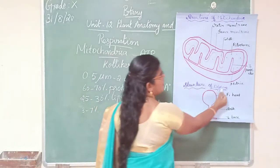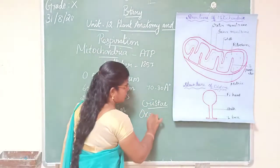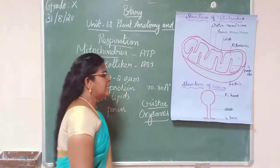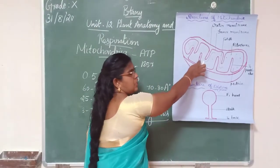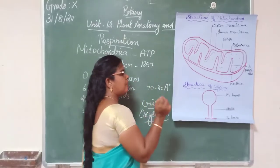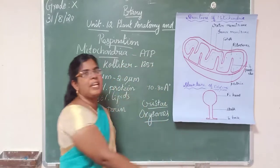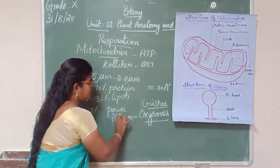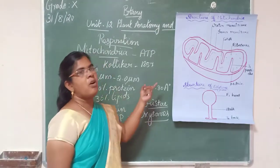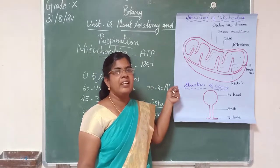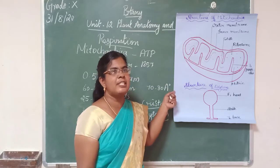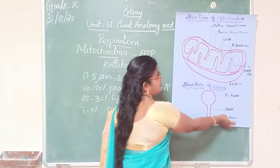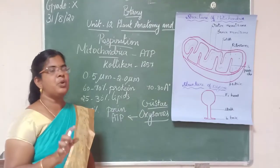The inner membrane bears small, fine, tenuous, racket-shaped particles known as oxysomes — also called F1 particles or elementary particles. These oxysomes are regularly spaced on the inner membrane and have a head (F1) and a base (F0). These oxysomes play an important role in ATP synthesis.